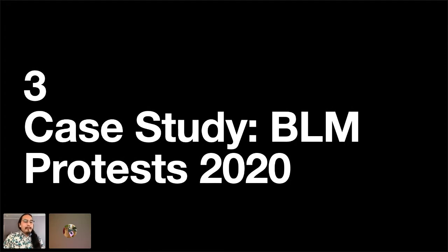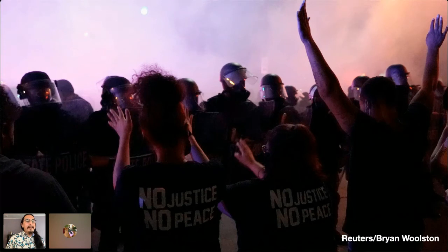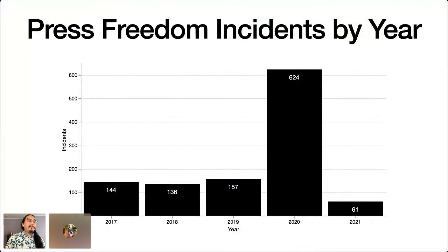As I'm sure everyone remembers, in May of last year, George Floyd was murdered on video by Minneapolis police officer Derek Chauvin, setting off a month of protests across the country. While these protests were clearly a reckoning on race for the U.S., they were also a flashpoint for press freedom. In 2020, we documented a total of 517 incidents specifically at Black Lives Matter protests. To put that in scale, in a normal year we document fewer than 160 incidents total — so this was an unprecedented event.